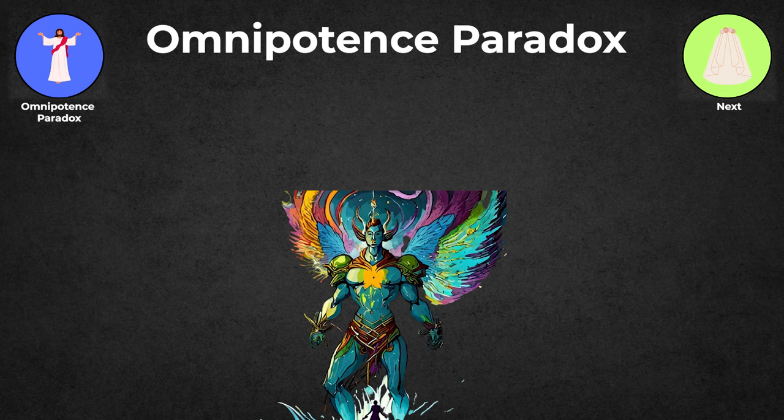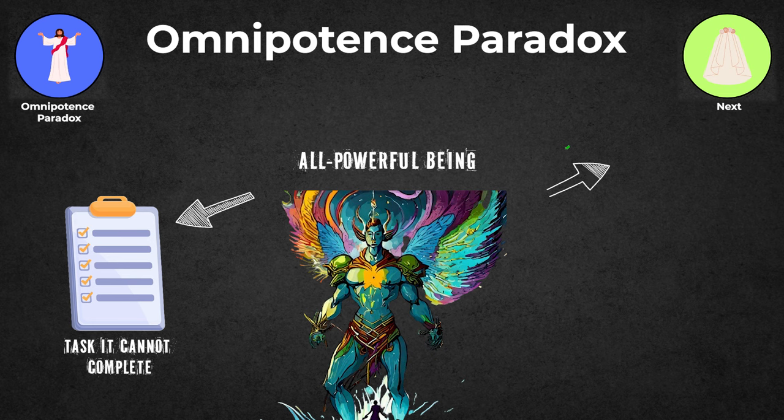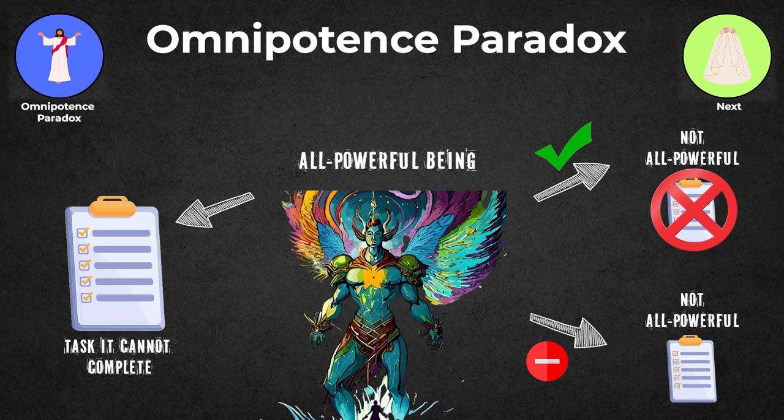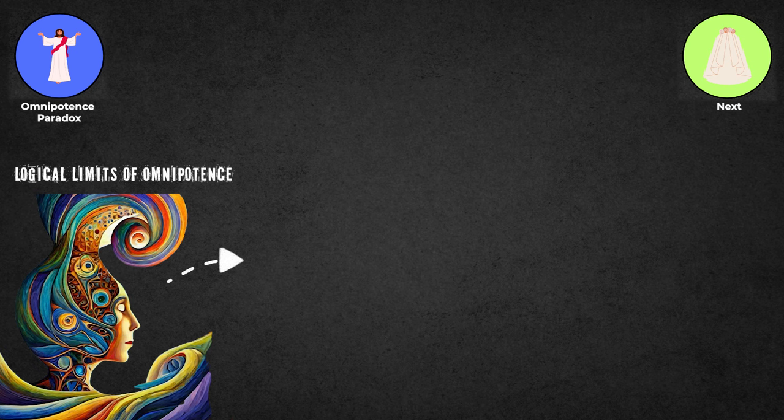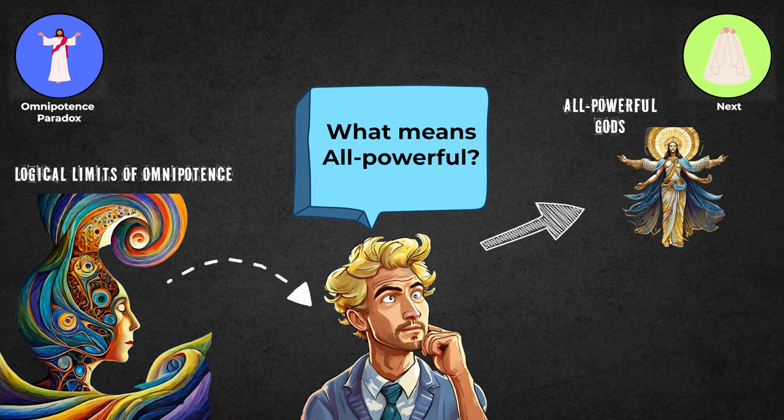The Omnipotence Paradox: This scenario questions whether an all-powerful being can create a task it cannot complete. If it can, then it's not all-powerful because it can't complete the task. If it can't create such a task, then it's also not all-powerful because there's something it can't do. This paradox explores the logical limits of omnipotence and challenges our understanding of what it means to be all-powerful. It also makes us think about what it means for gods to be all-powerful and how much we can really understand about religious ideas.